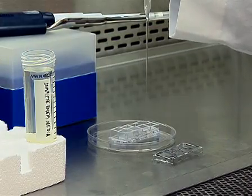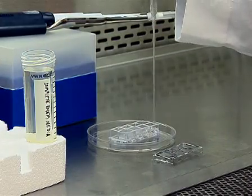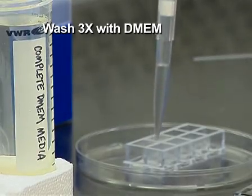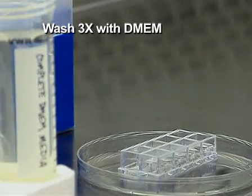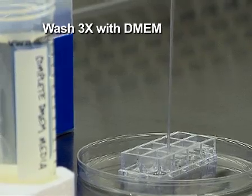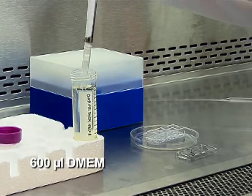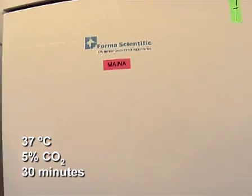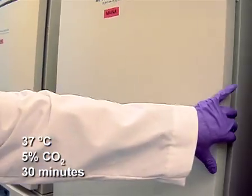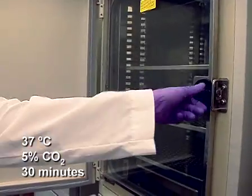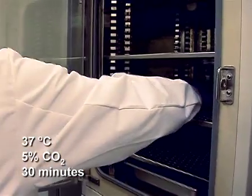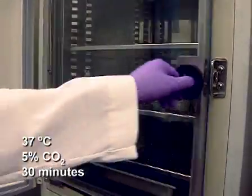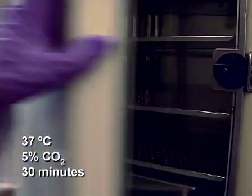After 5 minutes, remove the dilute Hoechst solution from each sample and wash the samples 3 times with 600 microliters of complete DMEM. After the final wash, add 600 microliters of complete DMEM to each sample. Incubate the samples at 37 degrees Celsius, 5% carbon dioxide, for an additional 30 minutes, to allow unincorporated fluorophore to diffuse out of the cells, which is required for intracellular labeling.